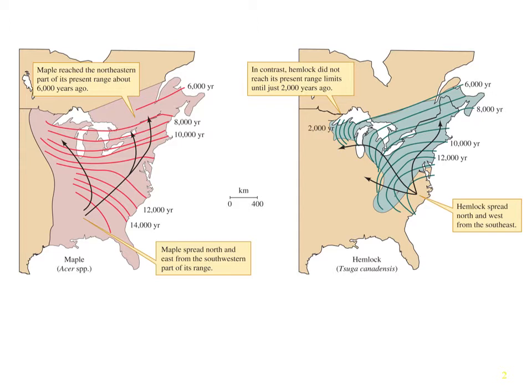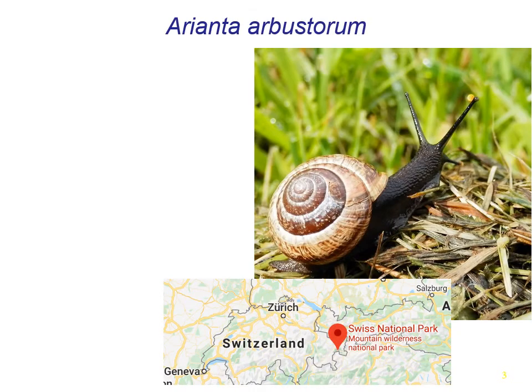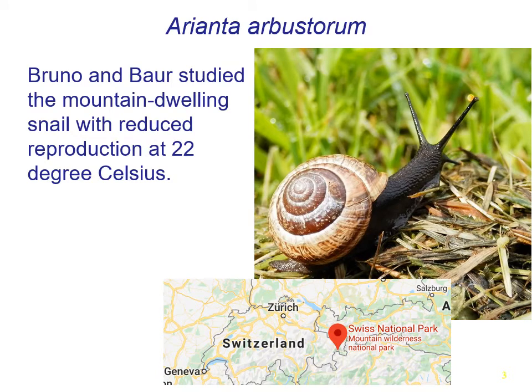But now we're getting climate change from increased carbon dioxide in the atmosphere. At one point in the textbook, they talk about this snail, Arianta arbustorum — it's a mountain-dwelling snail. They were studying it in the city of Basel, Switzerland, and found that the snail was not able to reproduce as well if the temperature got over 22 degrees Celsius. 22 degrees Celsius is probably about the temperature inside your house right now.